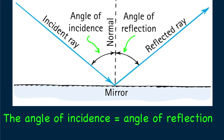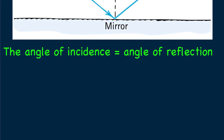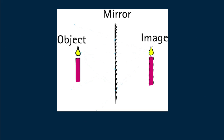Such reflection from a smooth surface is called specular reflection. Here's a candle flame in front of a flat mirror. We call a flat mirror a plane mirror.